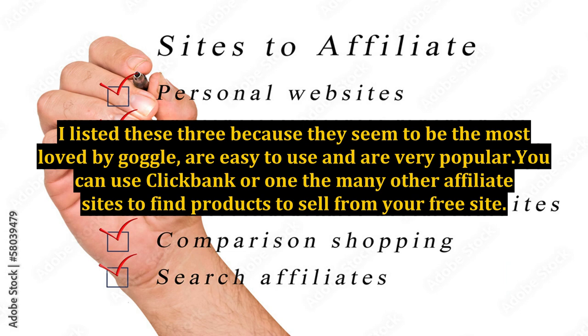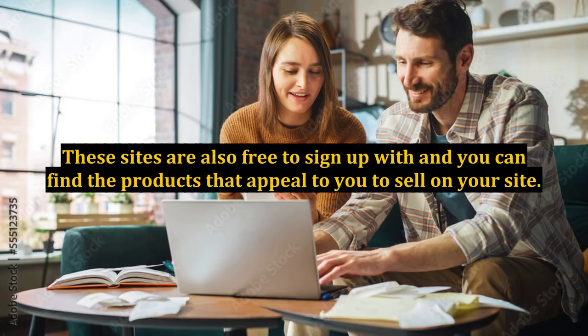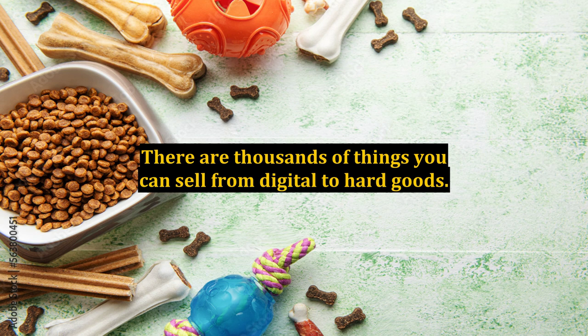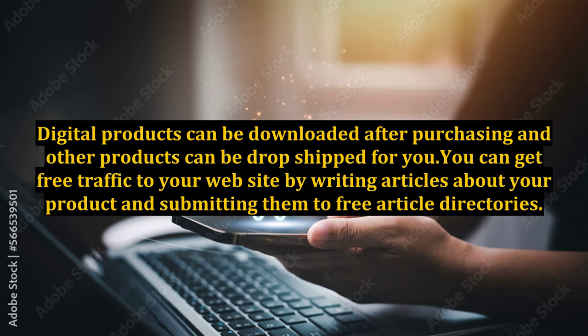You can use Clickbank or one of the many other affiliate sites to find products to sell from your free site. These sites are also free to sign up with and you can find the products that appeal to you to sell on your site. There are thousands of things you can sell, from digital to hard goods. Digital products can be downloaded after purchasing and other products can be drop shipped for you.